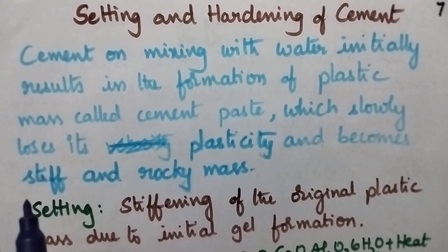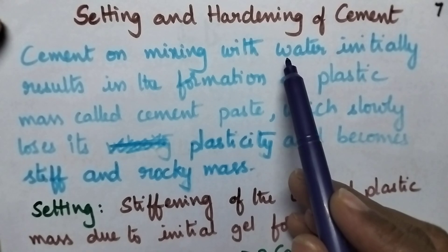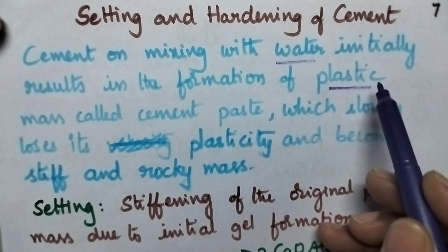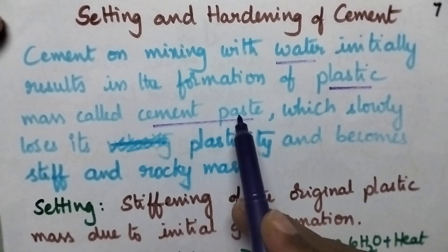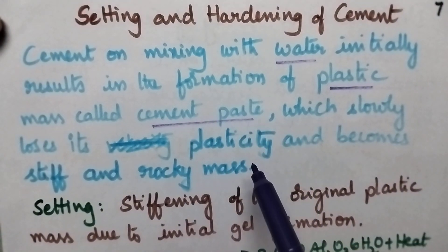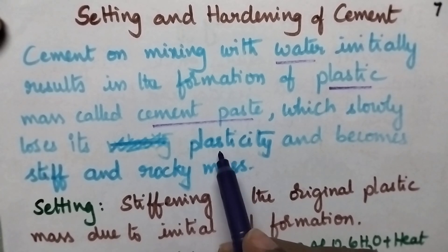In general, whenever cement is mixed with water, it initially results in the formation of a plastic mass, which is nothing but cement paste. This is called setting, and slowly it loses the water, with the result it loses plasticity.